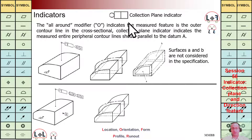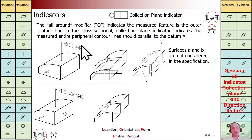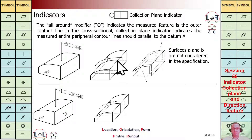For the collection plane indicator, we are going to have this circle on the left-hand side. It means we are going to consider all intersections with that plane. In this first example, we are going to have this profile align symbol, and then we are going to have this all-around or collection plane indicator. Here we have a parallel plane to A, and we are going to have this intersection — this cross section.